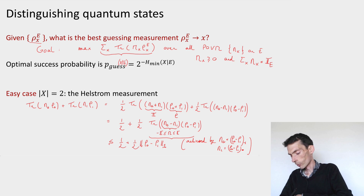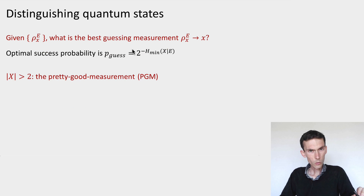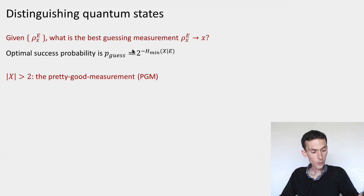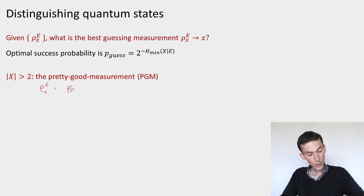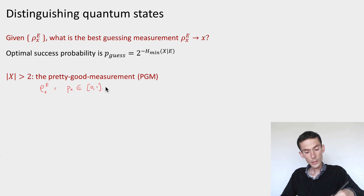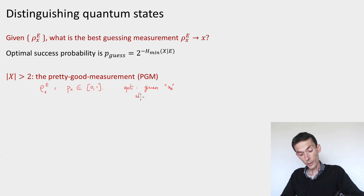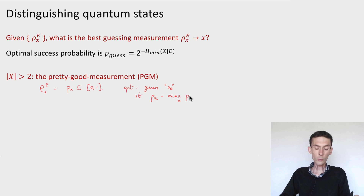The general case is a little bit more complicated. Let's first consider the classical case where ρ_E is just a number — the probability of x. So I take ρ_{xe} equal to p_x, just a number between 0 and 1. In this case, we know the optimal guessing measurement: we would guess x_0 all the time, such that the probability p_{x_0} is the maximum probability. We just guess the most likely outcome, and this will be the best guessing measurement.